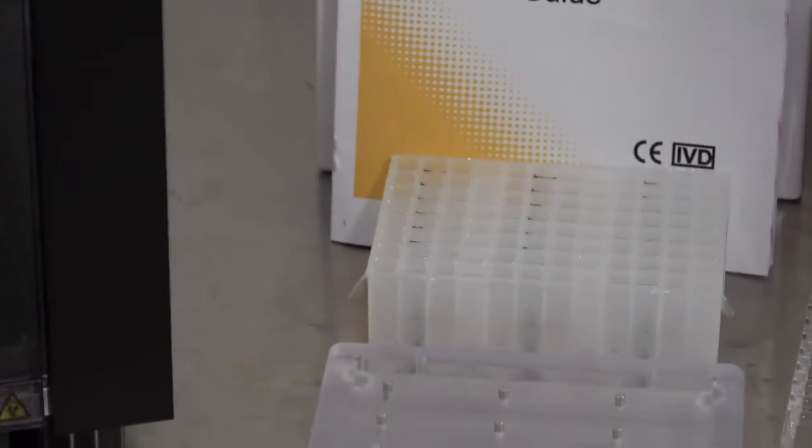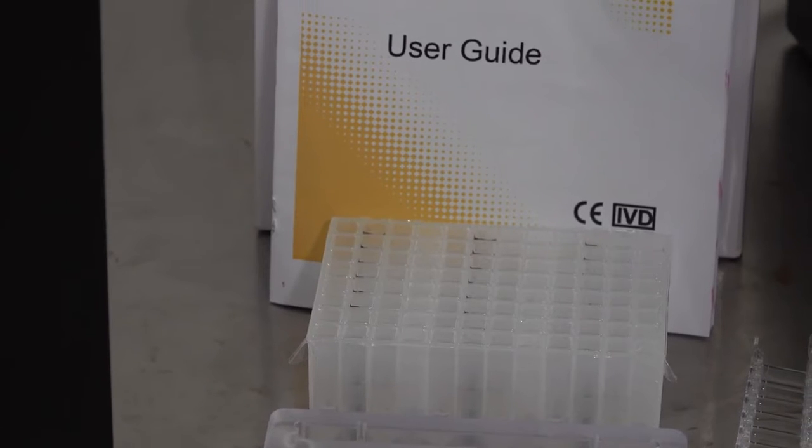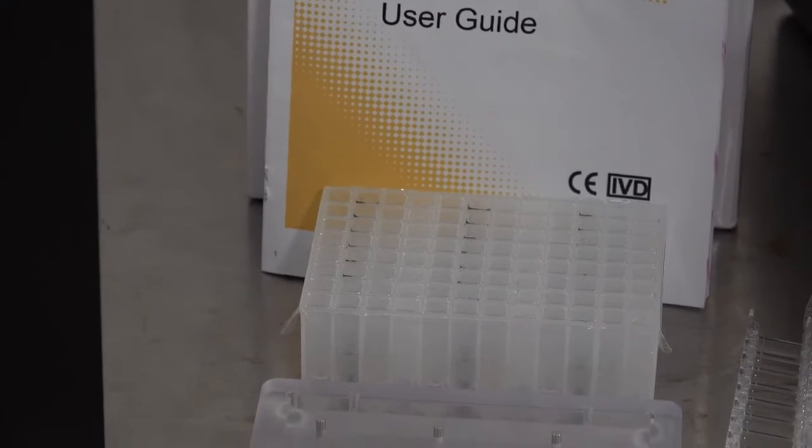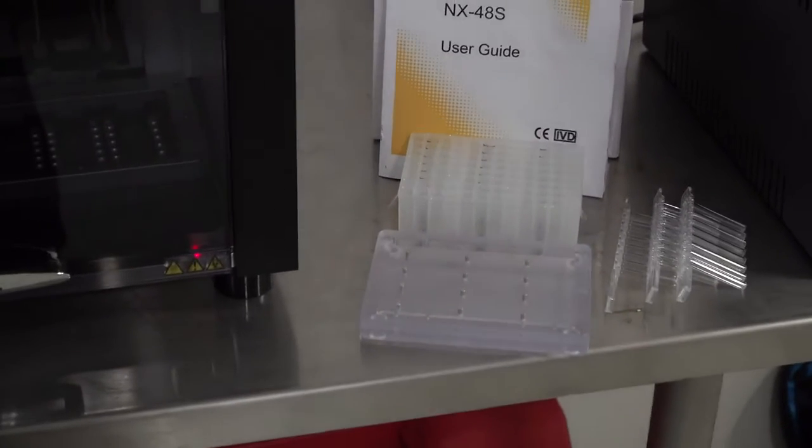The cartridge basically consists of 3 wells multiplied by 8 so we have 24 wells in which you can extract the sample and you can install two of these cartridges in the unit at any given time.